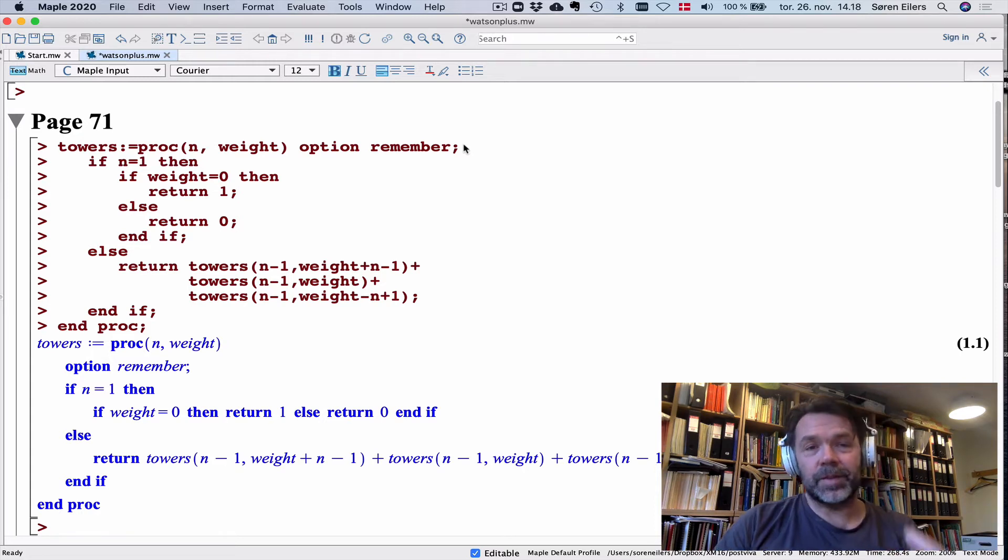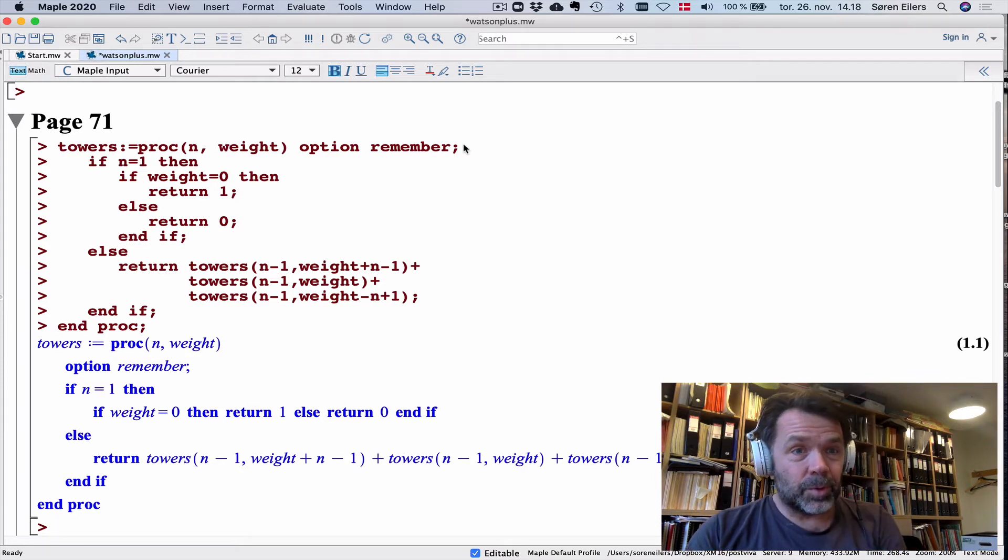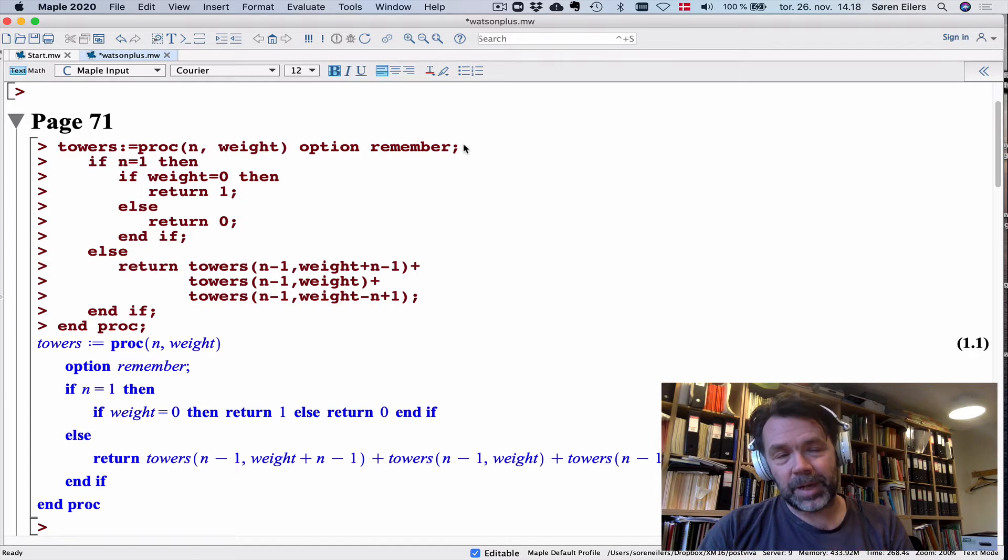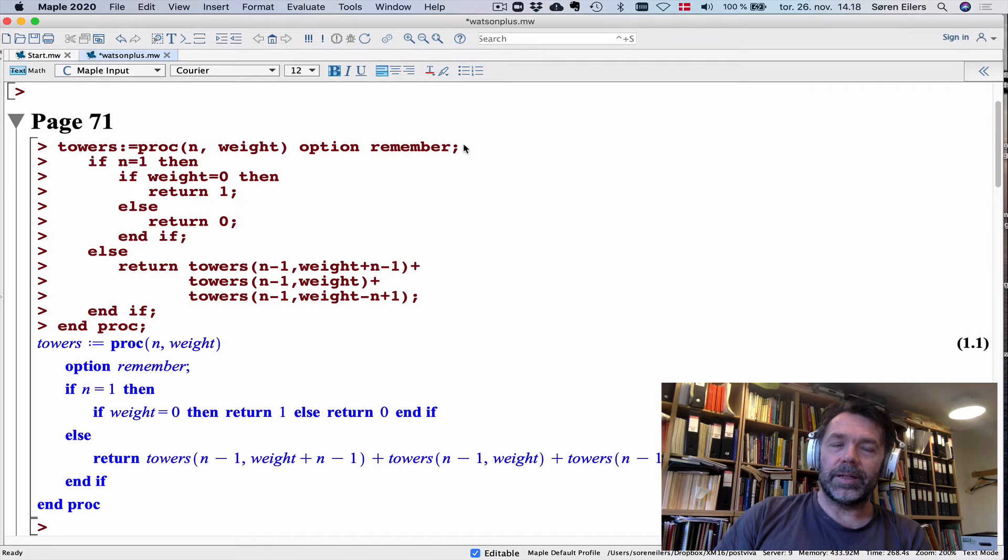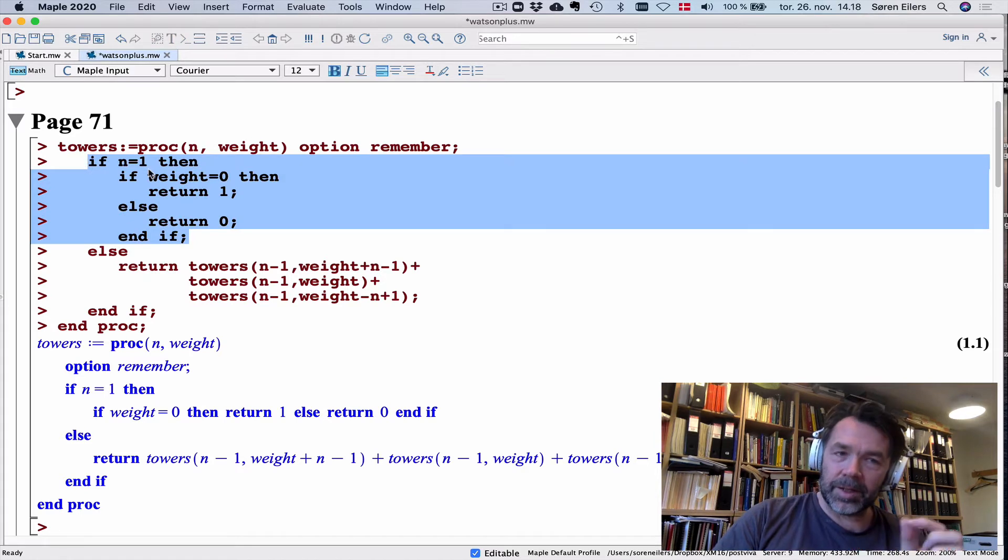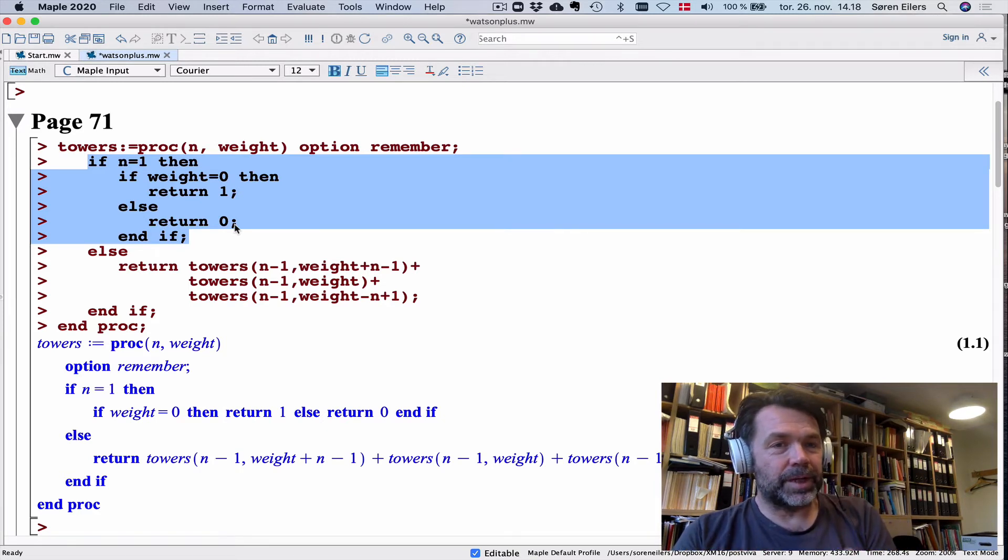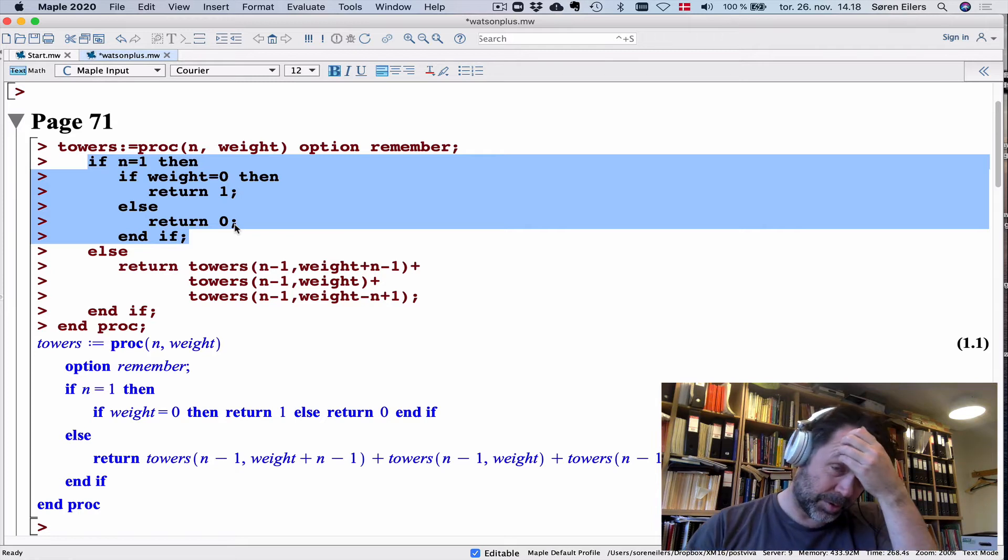The base case of this recursive problem is suppose there's only one brick. If there's only one brick, there's only one building. When does that building have given weight? The weight of the base brick, because by assumption we're putting it right on top of the zero coordinate, would have weight zero. My base case returns one if n is one and the weight is zero. Otherwise it returns zero because there are no towers with one brick and weight one, two, three, or minus one.